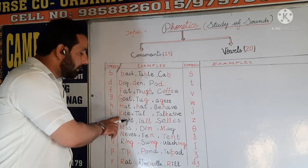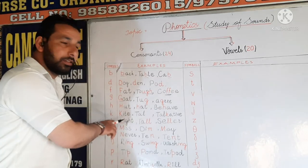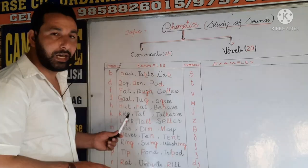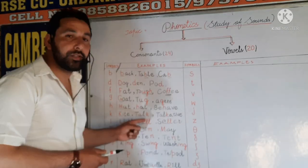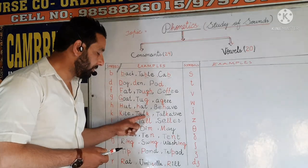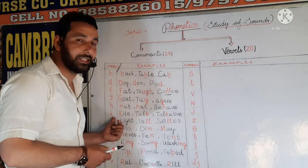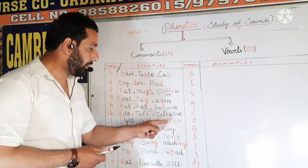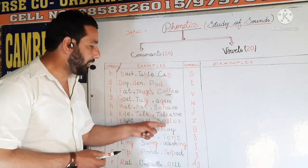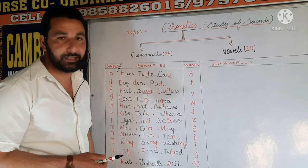Next is K. This phonetic symbol is not the letter K — this is the phonetic symbol K. For example, 'decide', 'talk', and 'knock' — the sound we produce here is actually the sound of this phonetic symbol K.